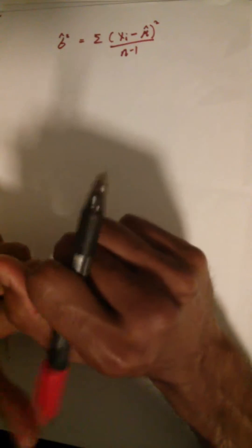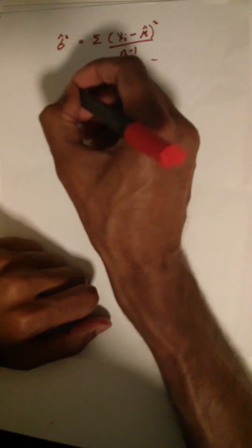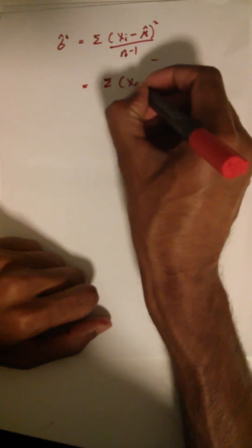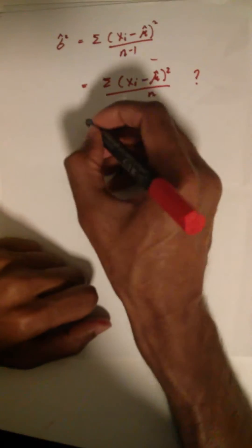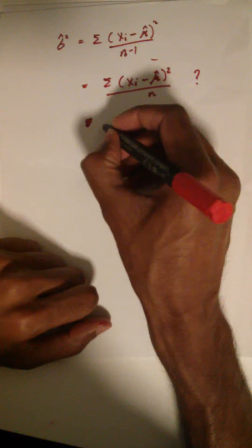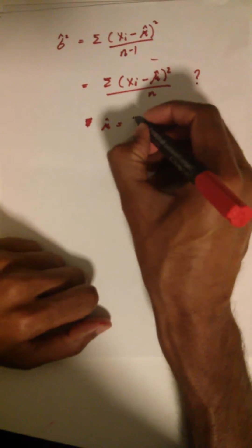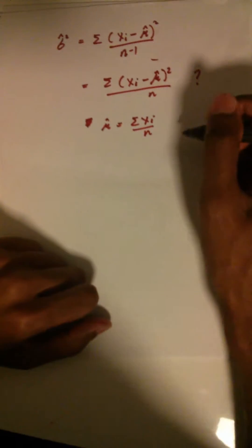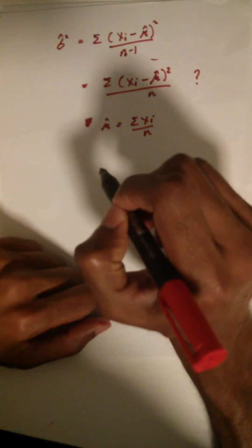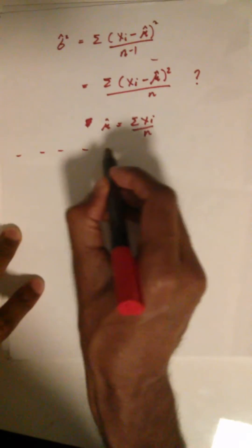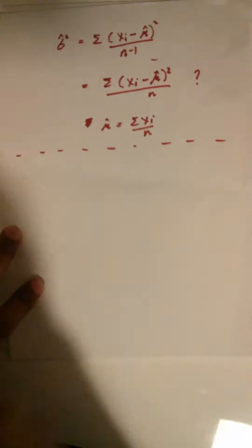In this video I'm going to be talking about why the unbiased estimate of variance divides by n−1 instead of n. The unbiased estimate of the mean is simply the sum of all the x's divided by n, which is intuitive — so why don't I divide by n for the variance as well? That's the question I'm going to be answering today.